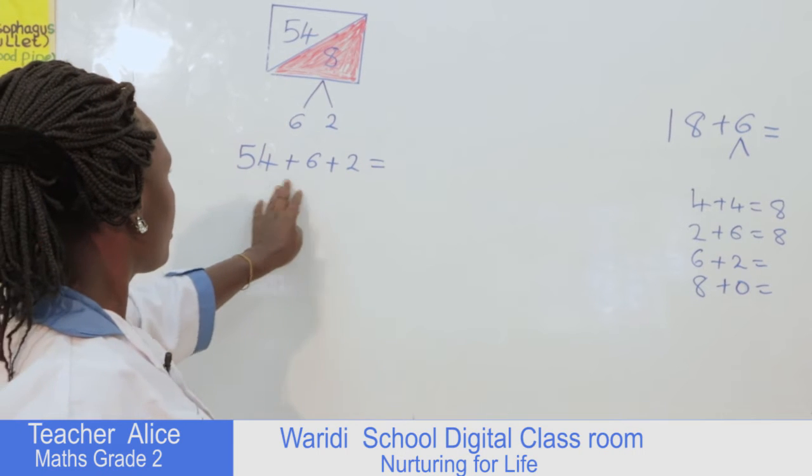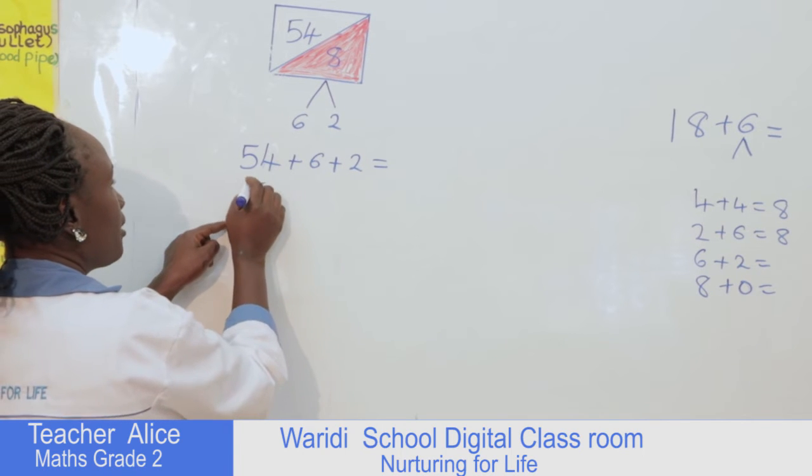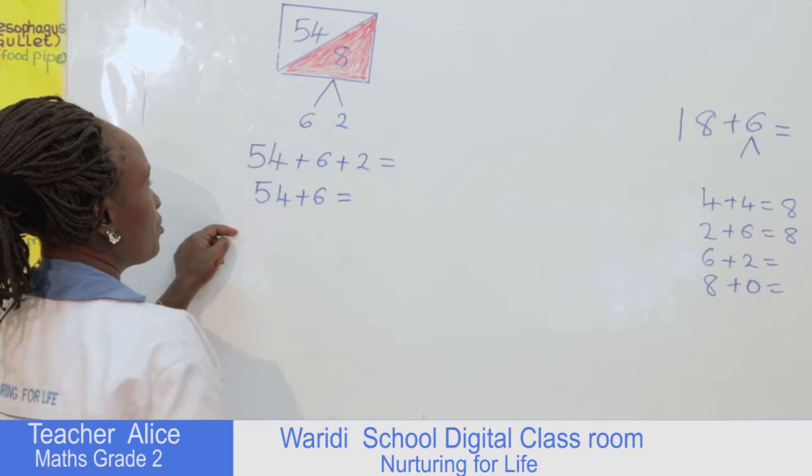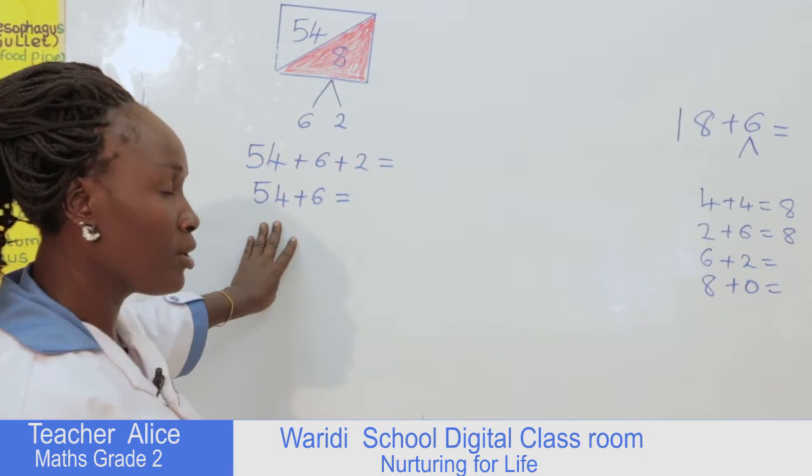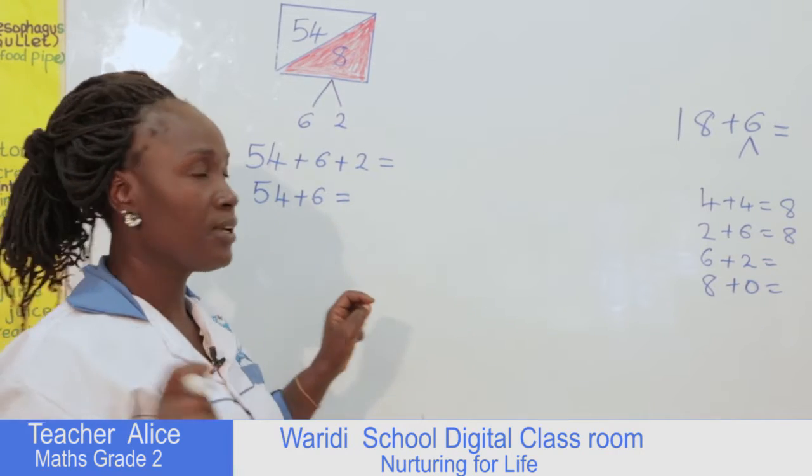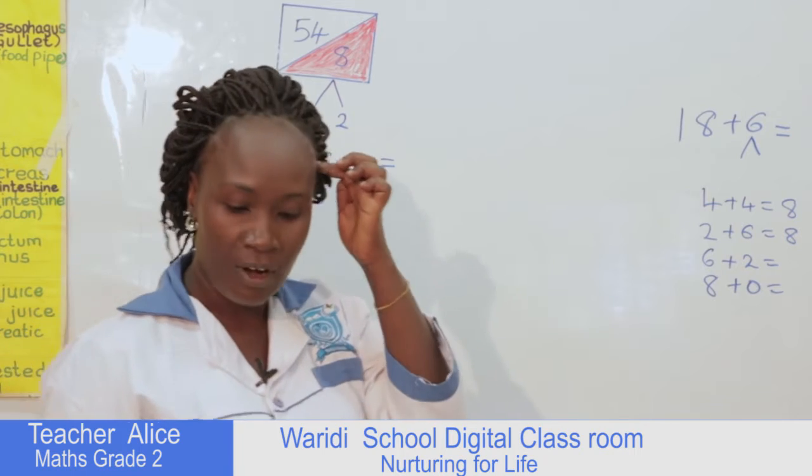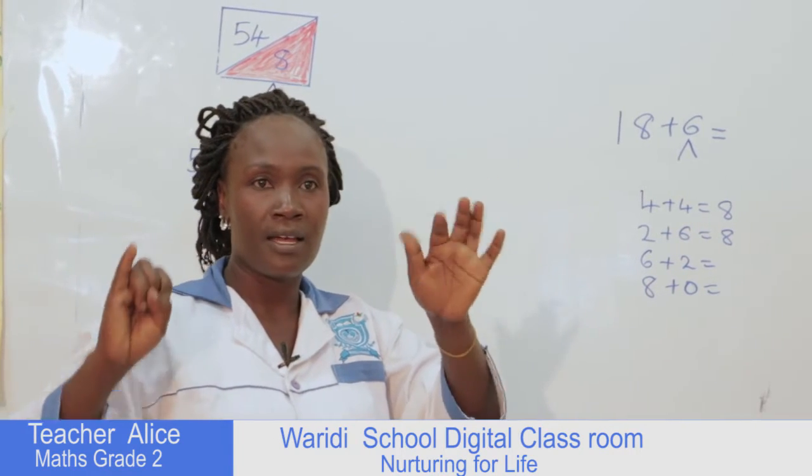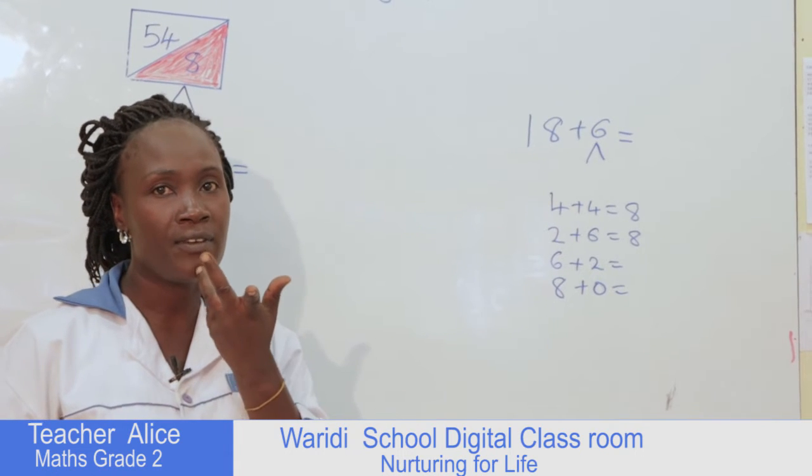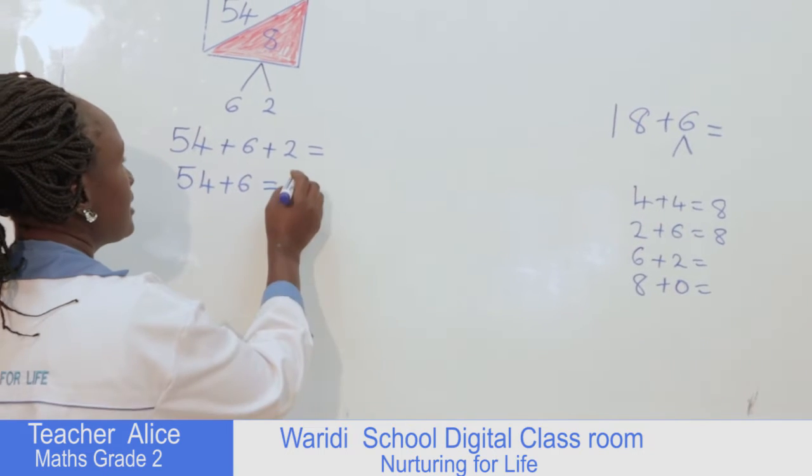So we'll write our 6 here and 2. After you have broken it like this, we will take the first two numbers. So we write 54 plus 6 is equals to, remember we said we are going to be using our body parts, our fingers. We put the 54 in our head then we start: 54 in my head, six fingers, 54 then 55, 56, 57, 58, 59, 60. So we'll write 60 here.